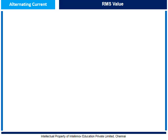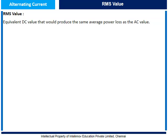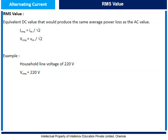Let us understand RMS value. RMS stands for root mean square. The RMS value is the equivalent DC value that would produce the same average power loss as the AC value. Vrms is given by Vm/√2. For example, household line voltage is 220 volts — this is the RMS value. Thus Vrms equals 220 volts, and Vm equals √2 × 220 equals 311 volts. This means 220V is the DC equivalent that would produce the same power loss as the 311V AC peak.